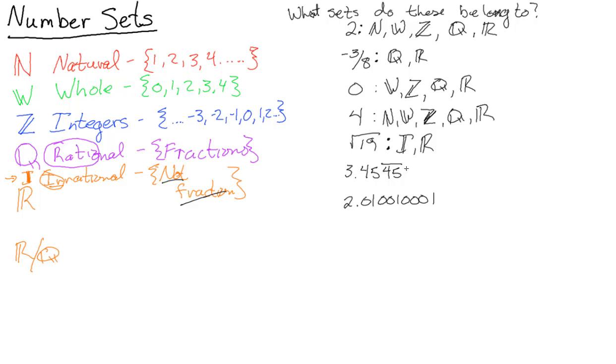3.4545, which repeats on forever—fractions are repeating decimals, so this repeats a pattern, which means it will be rational. You'll notice we are not natural, we're not whole, and we're not integers because this is a decimal fractionish, and so it is rational and real.